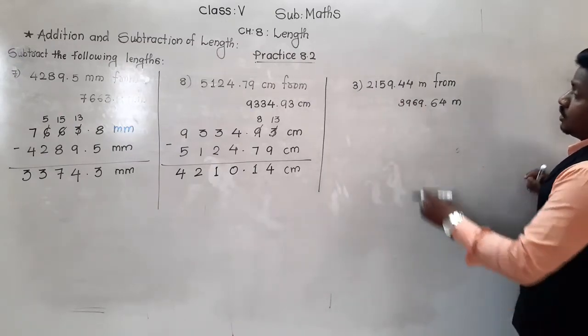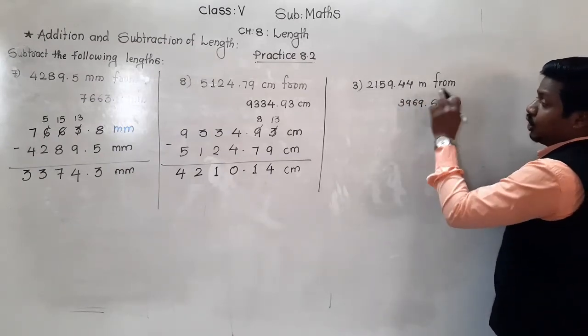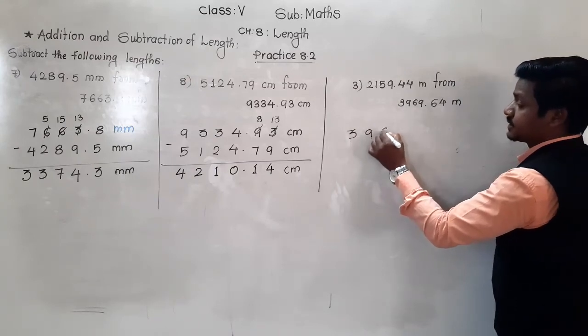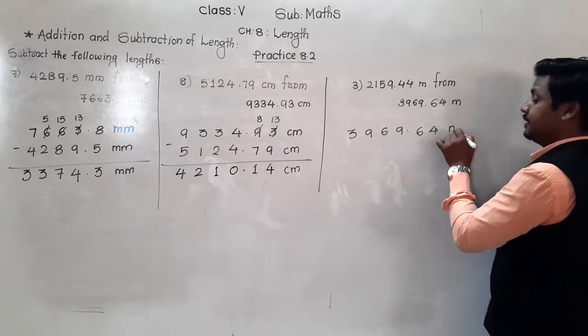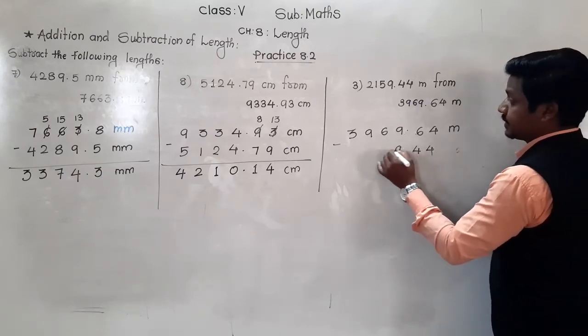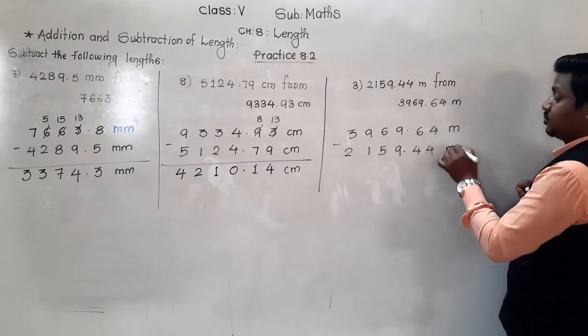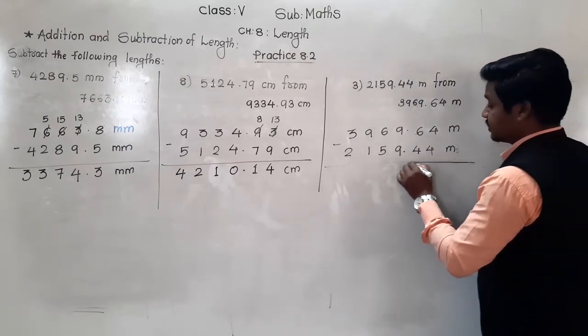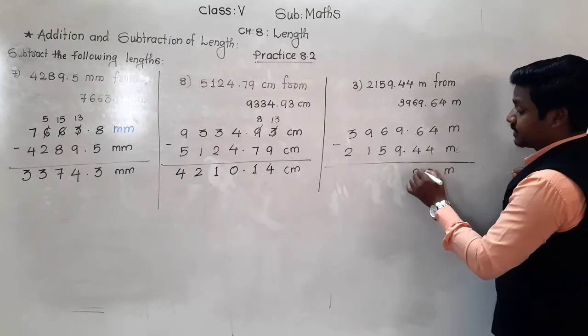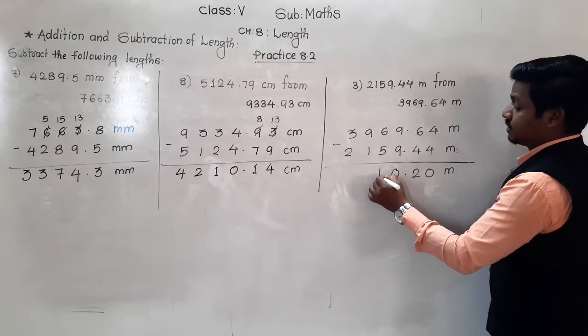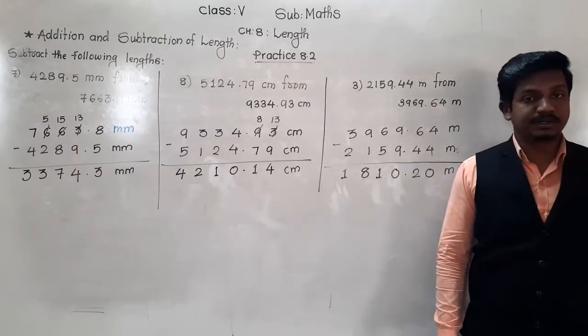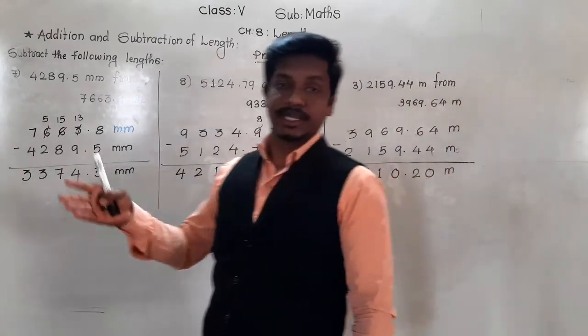Next: 2159.44 meter from 3969.64 meter. So this is greater length. Let us write it up: 3969.64 meter minus 2159.44. There is no borrowing because all the digits in the first number are greater. 4 minus 4 is 0. 6 minus 4 is 2. Decimal point. 9 minus 9 is 0. 6 minus 5 is 1. 9 minus 1 is 8. And 3 minus 2 is 1. So 1810.20 meter.